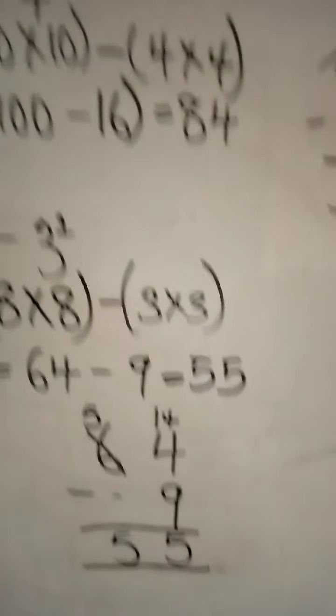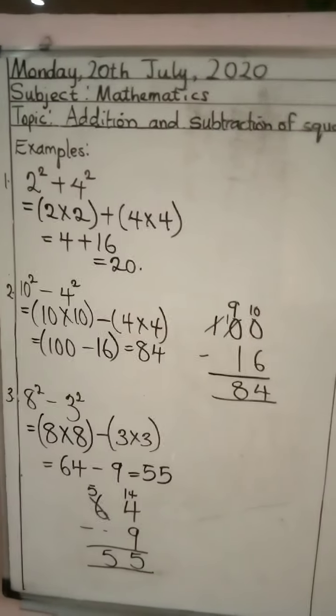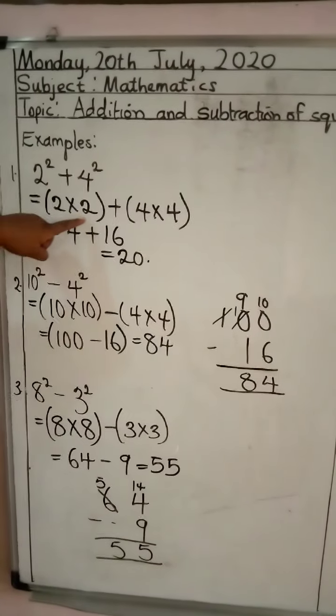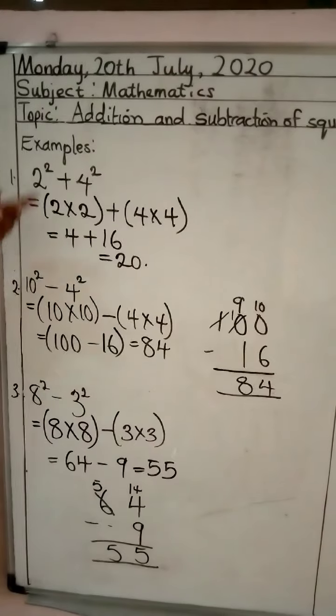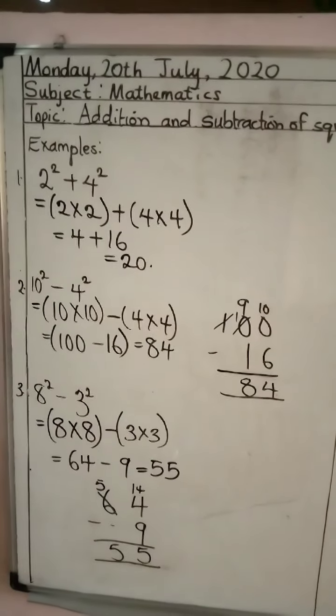This is very simple. Okay, remember that the square of a number is that number multiplied by itself, which is this. 2 times 2. Now, for addition, remember to expand and then you bring down your addition sign. The same thing is applicable to your subtraction.